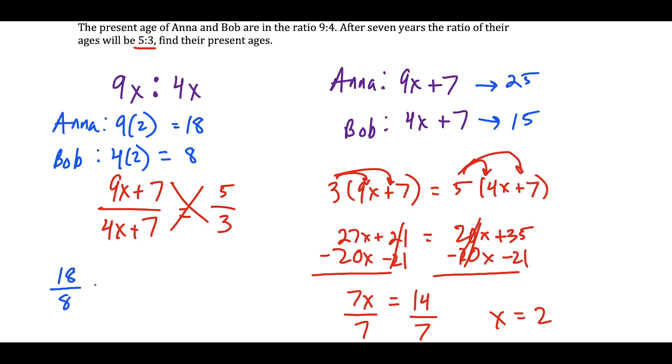When you think about these ratios, 18 over 8, when you divide the top and bottom by 2, reduces to 9 fourths, which checks out with the initial ratio 9 to 4. And if you compare 25 over 15, this is us just checking our work, divide the top and bottom by 5 and you get 5 thirds. So this also checks out with the second ratio.